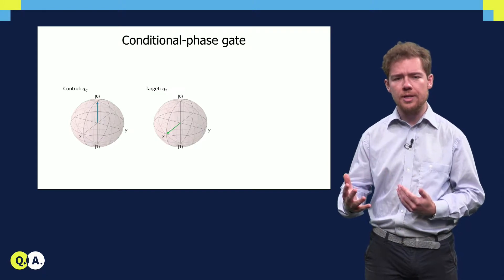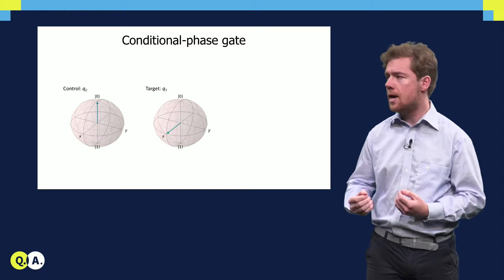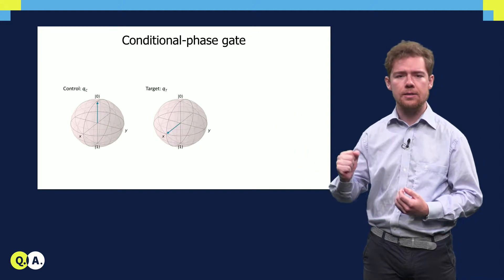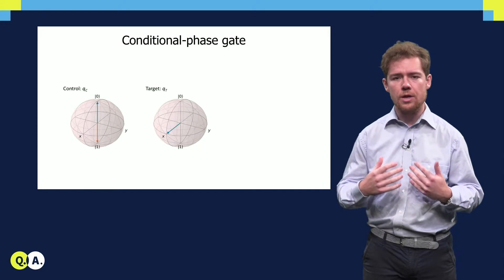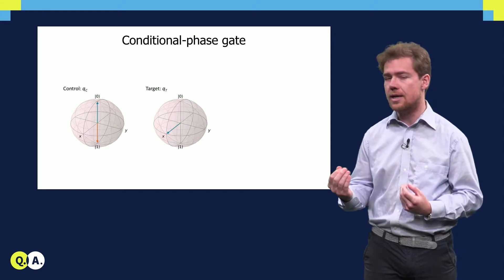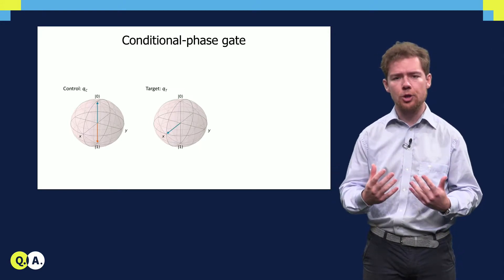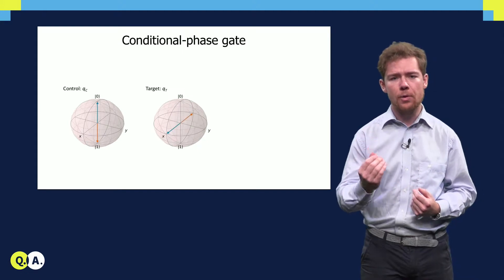When the control qubit is in the ground state and we apply the C-phase gate, there is no effect on the target qubit. However, when the control qubit is in the excited state, the target qubit will acquire pi radians of phase.